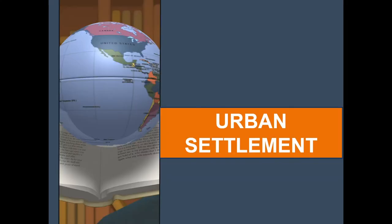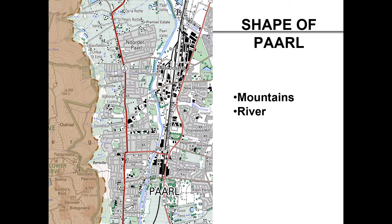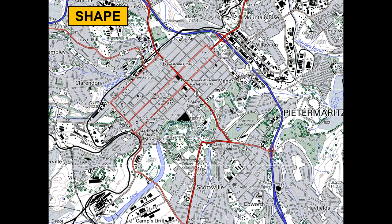Moving on to urban settlements. Let's have a look at the shape of Paarl. We look at our relief — the brown on the map — our mountains and the river. Paarl is situated along the river, therefore the shape is linear. Modern Paarl is in fact stellar, as various activities have moved outwards. These shapes and patterns — including rectangular — can also be asked in your map work and you have to apply your theory.